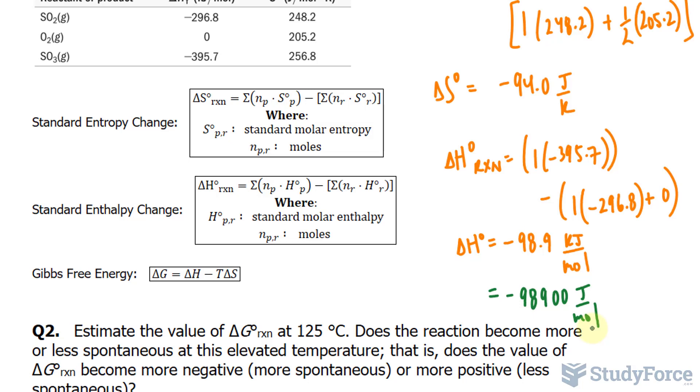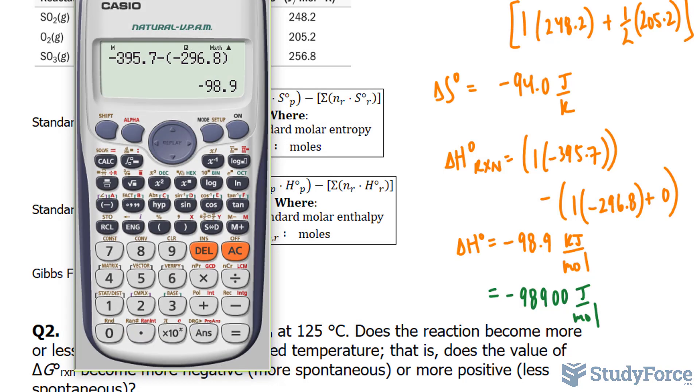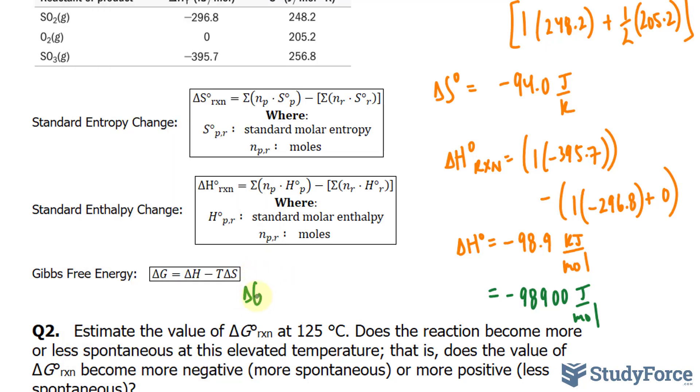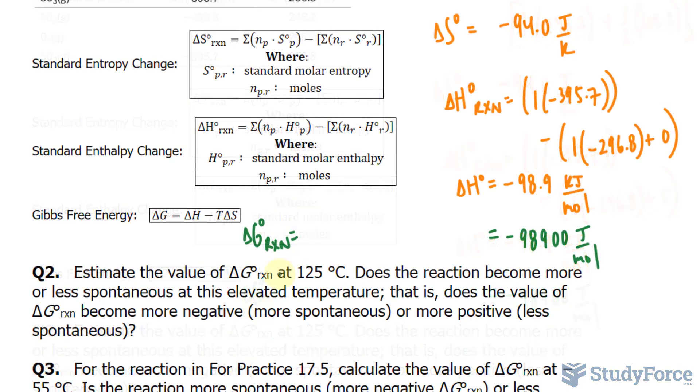Now we can finally use Gibbs free energy formula. Of course, the temperature needs to be in Kelvin, so I'll change 25 degrees Celsius into Kelvin by adding 273 to that. So that's 298, but let me show you. 298. I have delta G for the reaction is equal to this number, negative 98,900. That's three significant figures, don't forget.